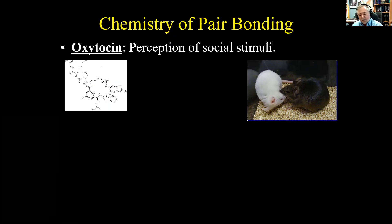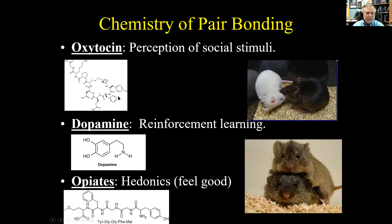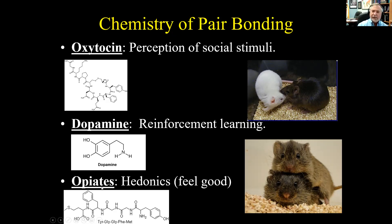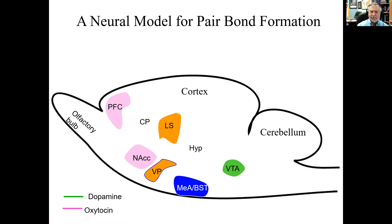Oxytocin's role in pair bonding is really in the perception of social stimuli — getting that clear neural encoding of individuals and social cues. Great work done by Zuoxin Wang at Florida State University showed that dopamine is also important: D2 receptors are critical for pair bonding. If you block D2 receptors, animals can't form bonds. We've also shown that opiates are important — blocking the mu opioid receptor also prevents bond formation. It's really a chemical cocktail acting in the brain to create a bond.